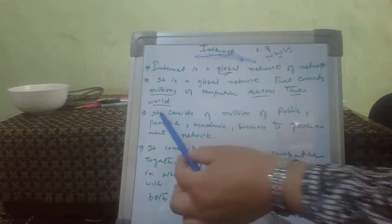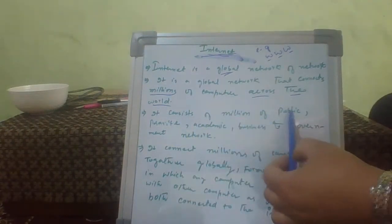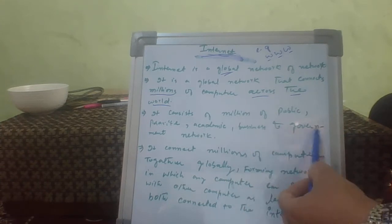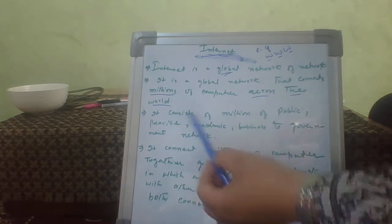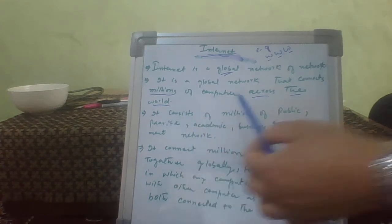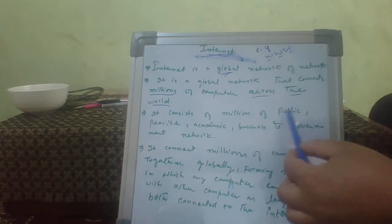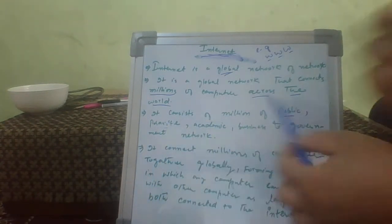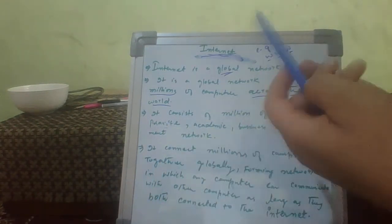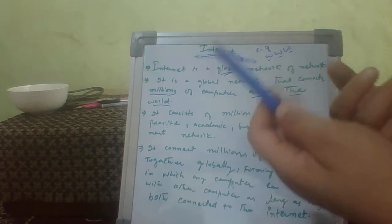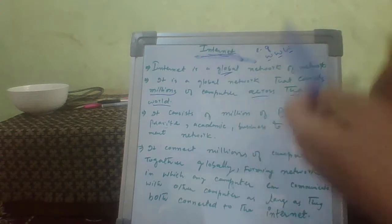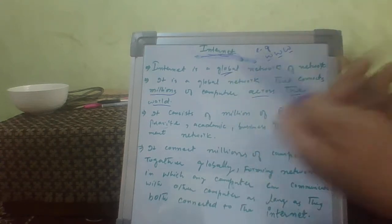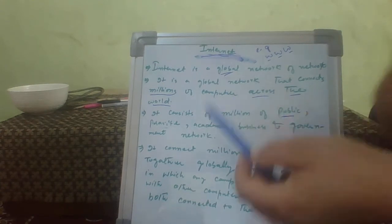It consists of millions of public, private, academic, business and government networks. Public means for everyone who can access the Internet — we access the Internet, so it means we are a public network.